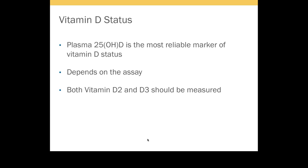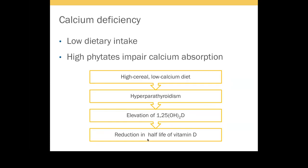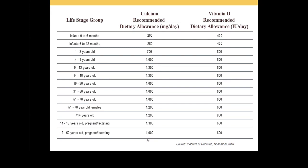Plasma 25-hydroxyvitamin D is the reliable marker of vitamin D status; both D2 and D3 are measured and reported as a combined value. Regarding calcium deficiency: it could be due to low dietary intake or increased phytate content in food which impairs calcium absorption. When patients eat a high-cereal, low-calcium diet, they develop secondary hyperparathyroidism, which elevates 1,25-hydroxyvitamin D and reduces the half-life of vitamin D. These are the daily requirements of vitamin D and calcium for different age groups according to Institute of Medicine research.